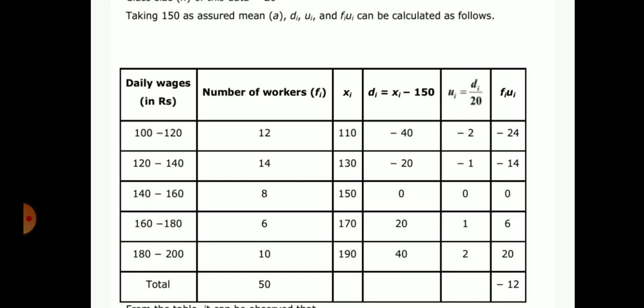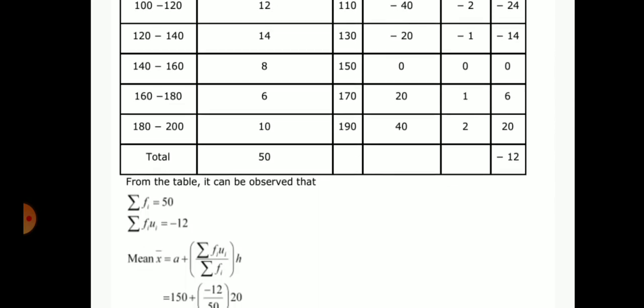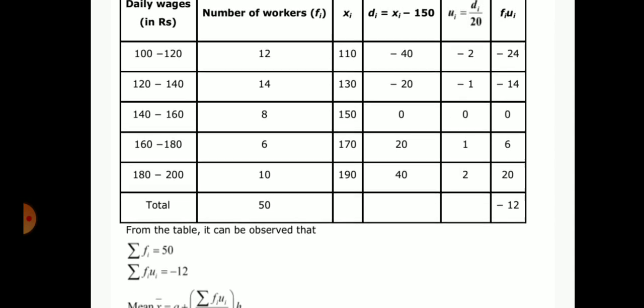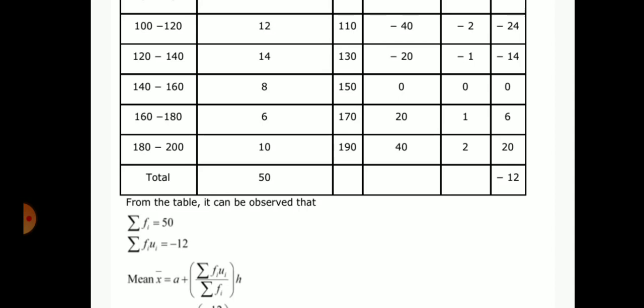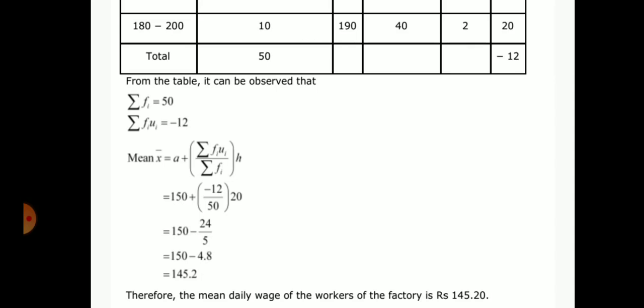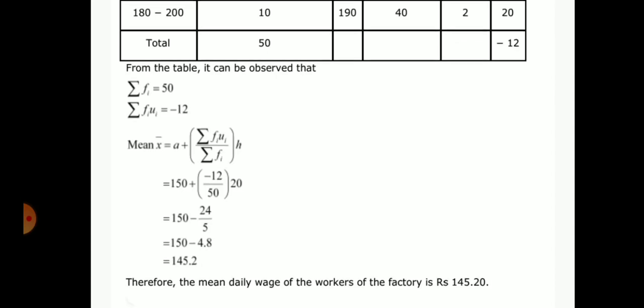From the table, it can be observed summation of fi equals 50 and summation of fiui equals -12. Mean x̄ equals A plus summation of fiui divided by summation of fi into h, that is 150 plus -12 divided by 50 into 20, which equals 150 minus 24 divided by 5, equals 150 minus 4.8, equals 145.2. Therefore, the mean daily wage of the workers of the factory is rupees 145.20.